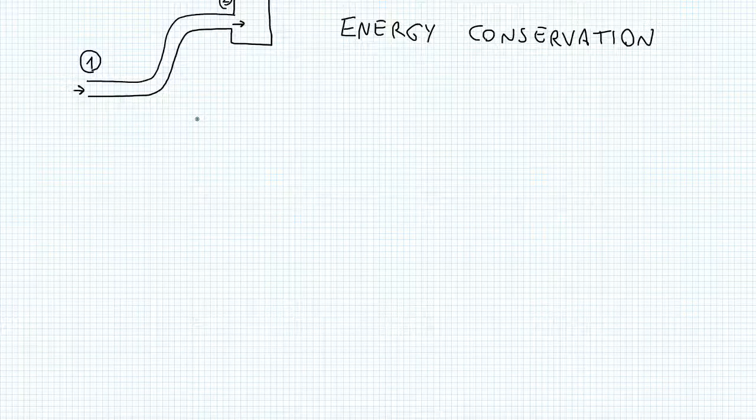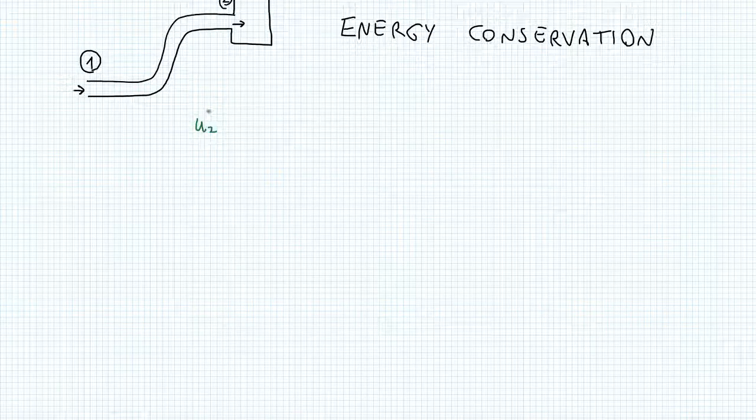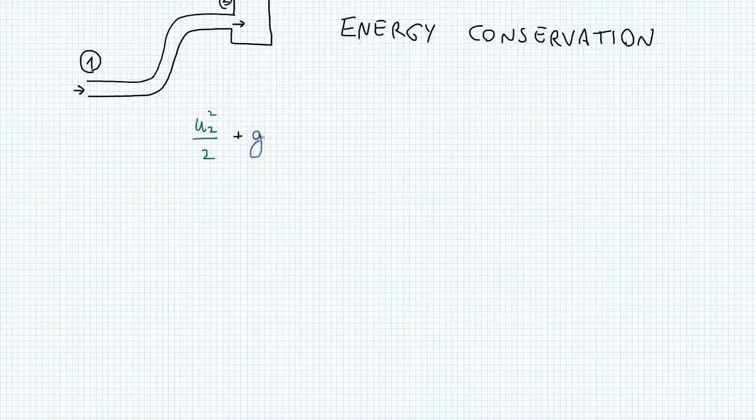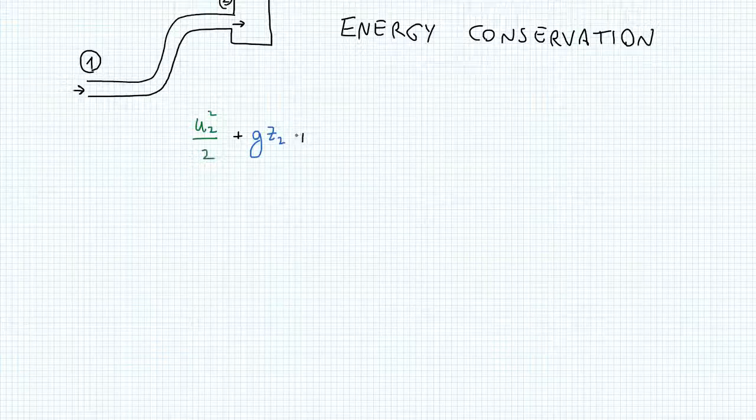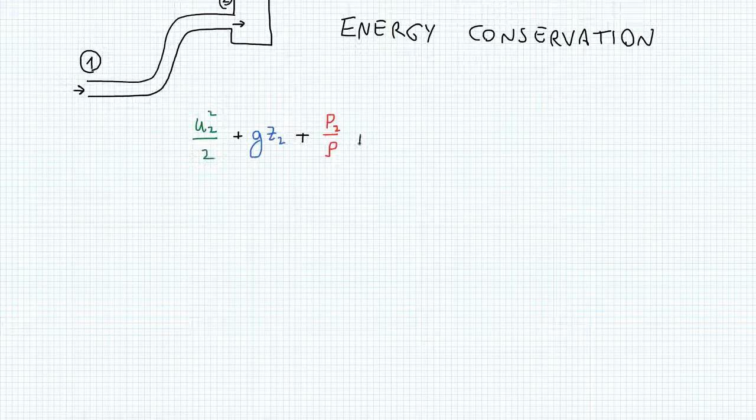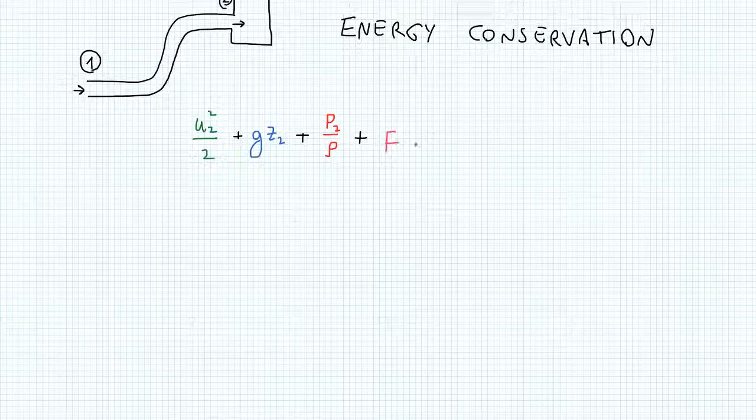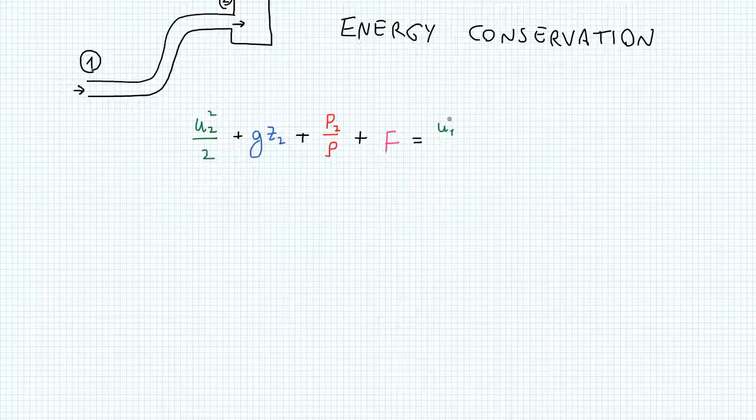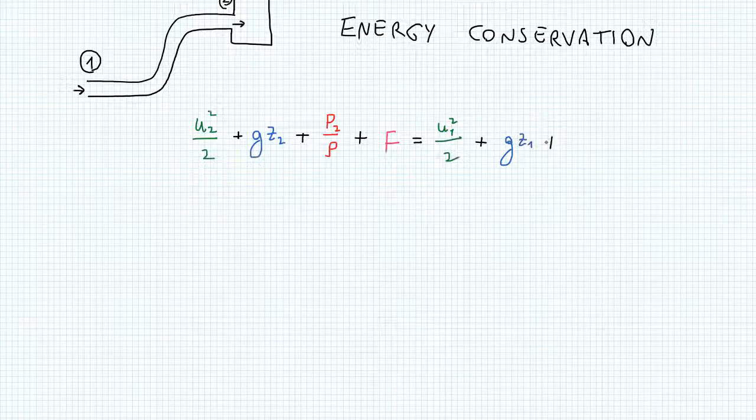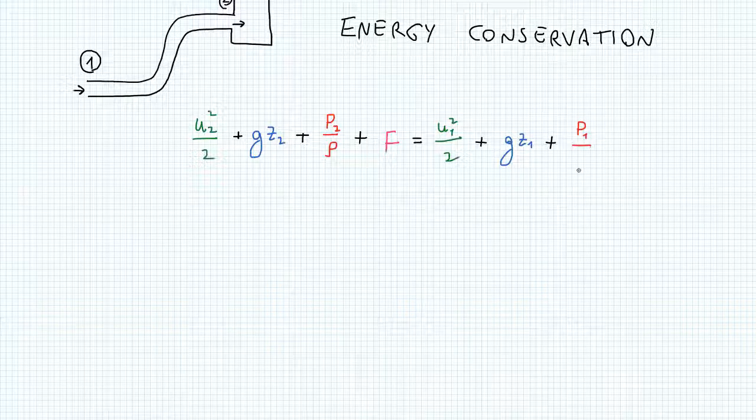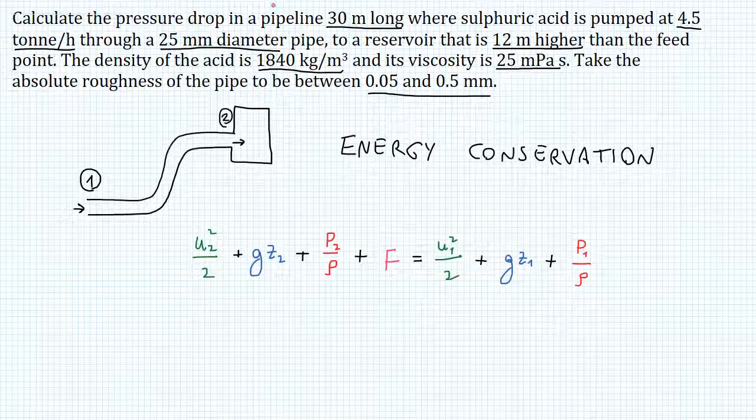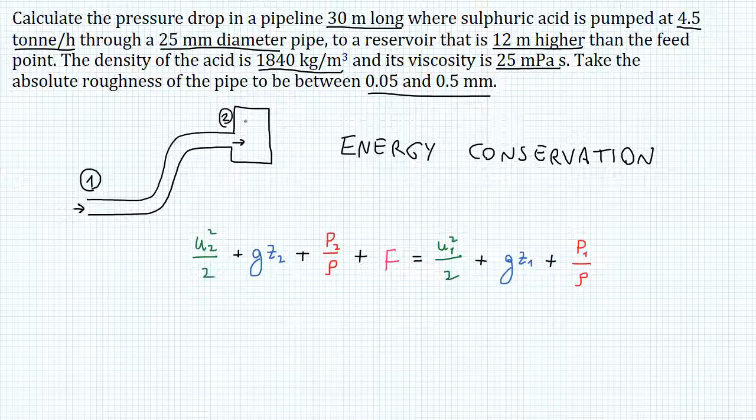Let's start writing this, different colors will help. So in green, I'll write U2 squared over 2, which is our kinetic energy term, plus G times Z2, which is our potential energy term, plus P2 over rho, the density, which is our pressure term, plus F, which is the energy dissipated, and I'll talk about it later, is equal to U1 squared over 2, plus G times Z1, plus P1 over rho. So the three different colors represent kinetic, potential, and pressure terms of energy, and F represents the energy dissipated.